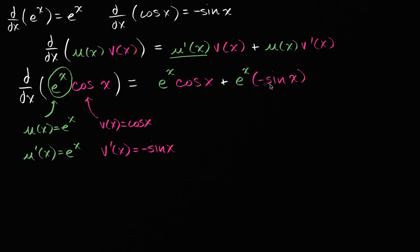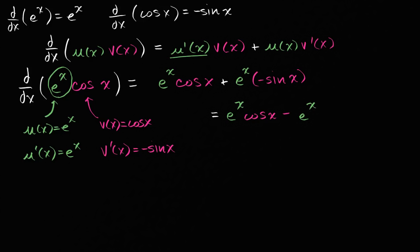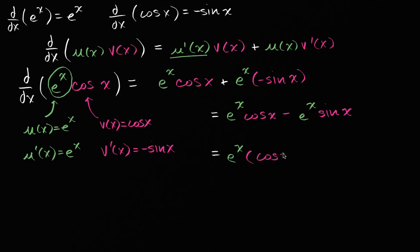Now we can just simplify. This is going to be equal to e to the x times cosine of x, minus e to the x times sine of x. Or if you want, you could factor out an e to the x: this is the same thing as e to the x times cosine of x minus sine of x.